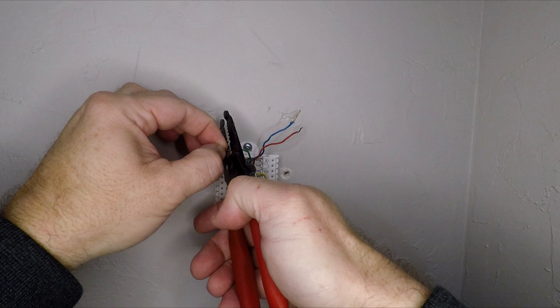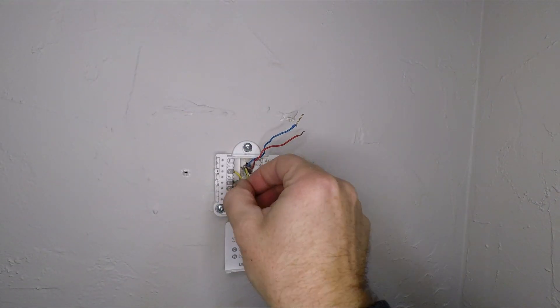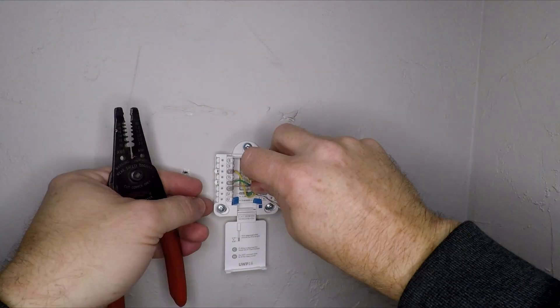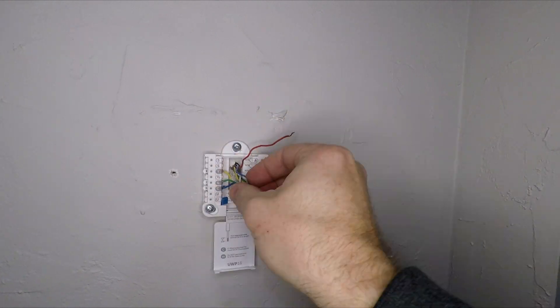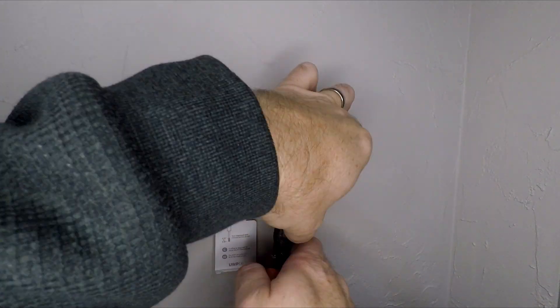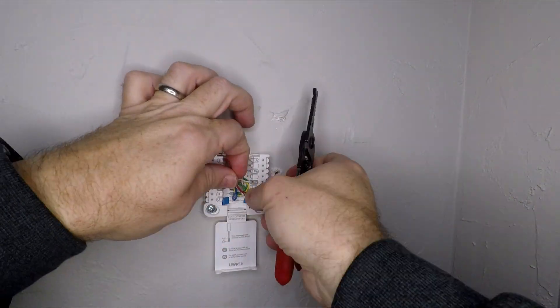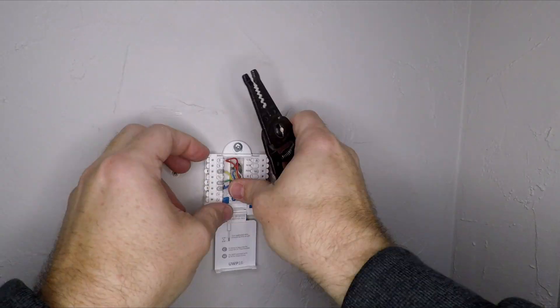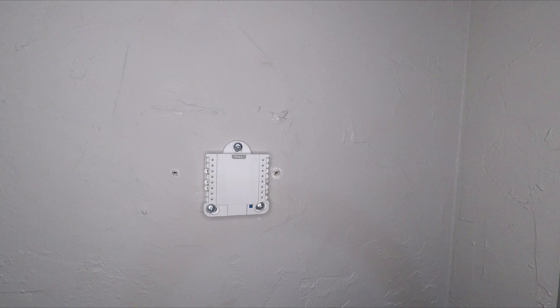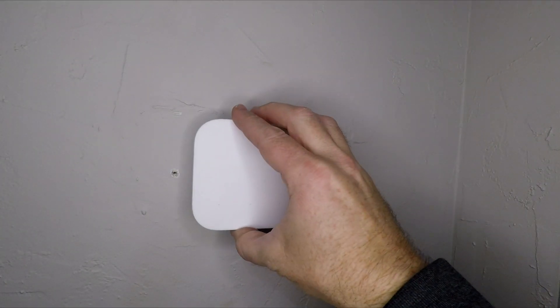And then we just connect the wires. Pay attention to the wiring diagram that's in the instructions. Wiring changes based on your system, so I'm not going to go through which wire goes where, you need to figure that out based on the system that you have. Once it's all wired up, go ahead and connect it to your Alexa account in your app on your phone.